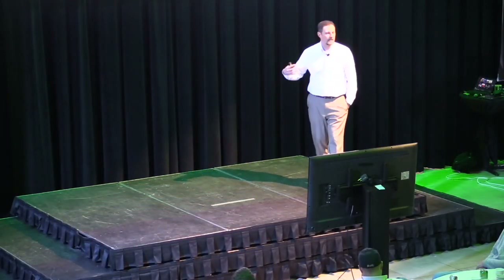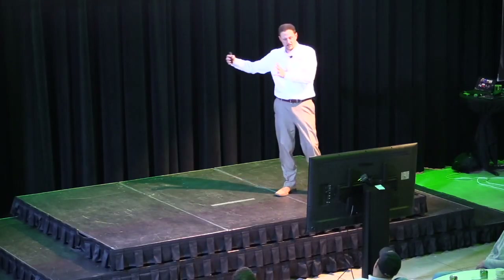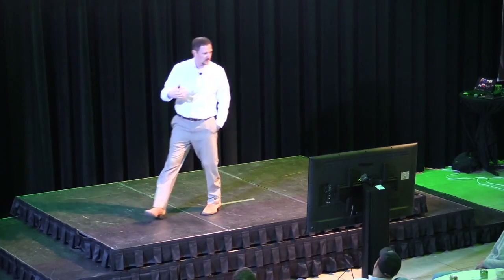If I go out and lose plant density — say instead of 180,000 beans I wanted, I'm at 150,000 — I've just wasted 30,000 seeds. I paid for genetics that cost three times what they did 15 years ago and they died because they couldn't hit moisture. Now I have variable growth stages, canopy issues, water retention problems, evaporation faster than transpiration, different pest management, weed management problems, lodging in one area, the combine running half empty — and luxury fertilizer sitting there unused. At what point do we stop solving symptoms and start solving the actual problem?